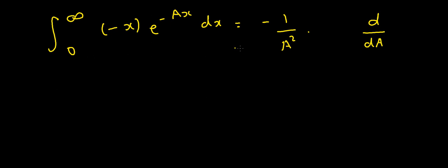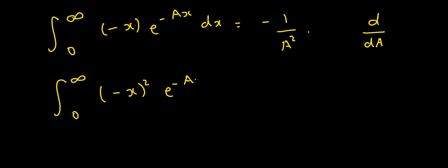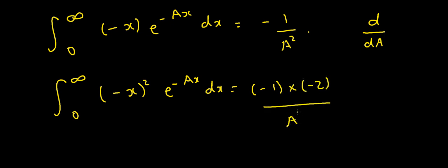If I differentiate both sides again, I get another factor of minus x coming down, giving minus x times minus x, or x squared. So differentiating again gives the integral from 0 to infinity of x squared e to the minus ax dx. On the right-hand side, the derivative of minus 1 over a squared is minus 1 times minus 2 over a cubed, which is 2 over a cubed. This is the second derivative.